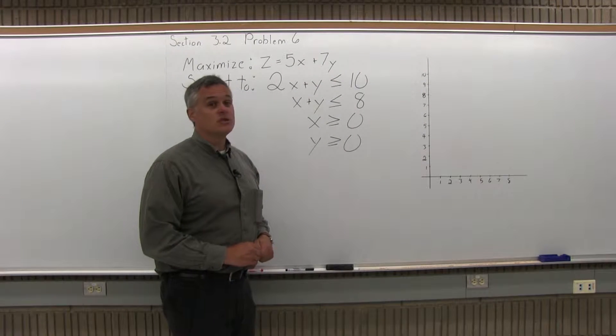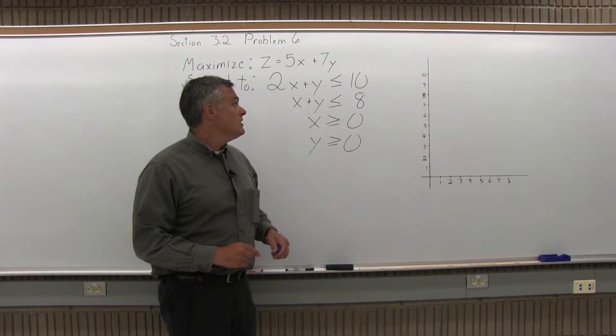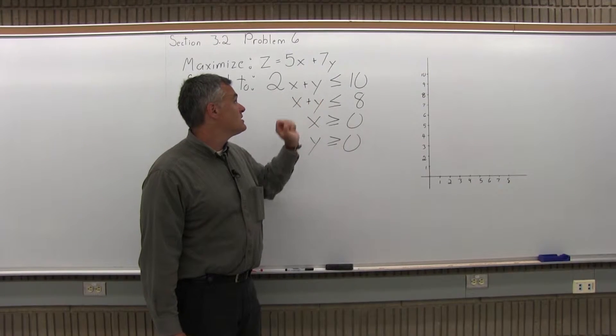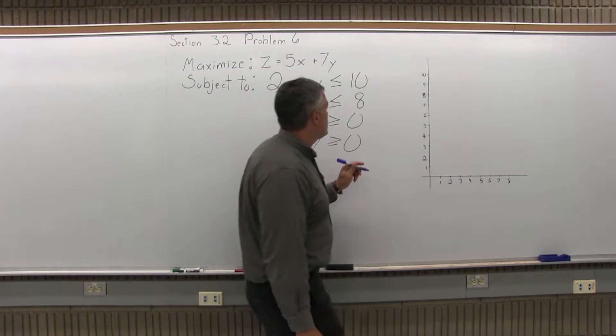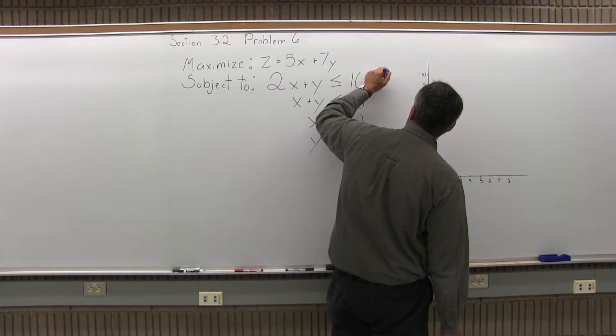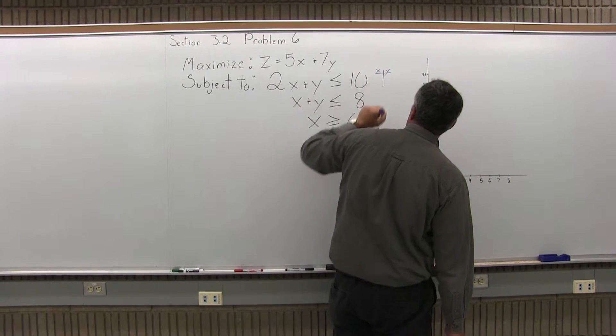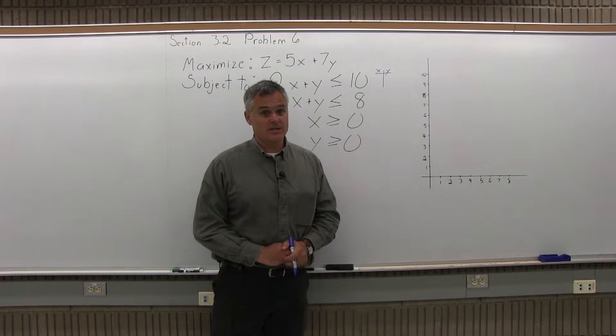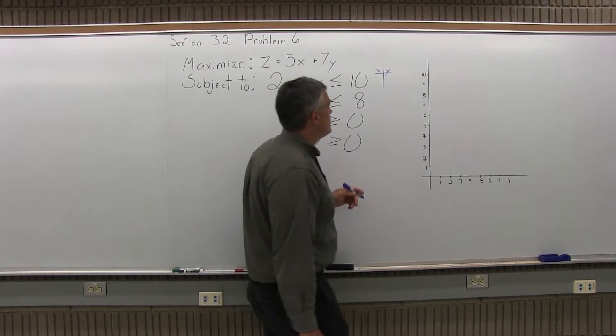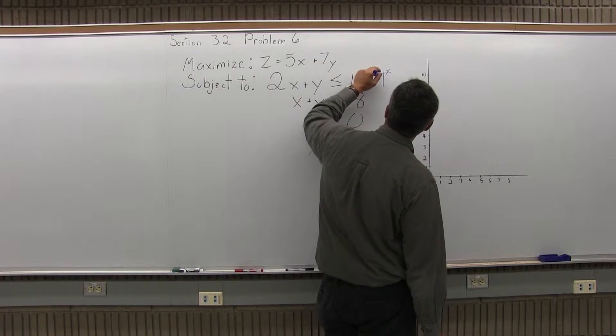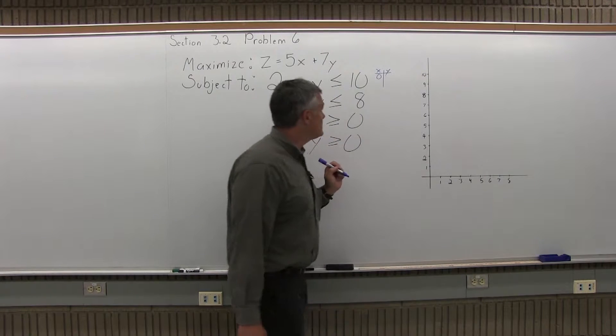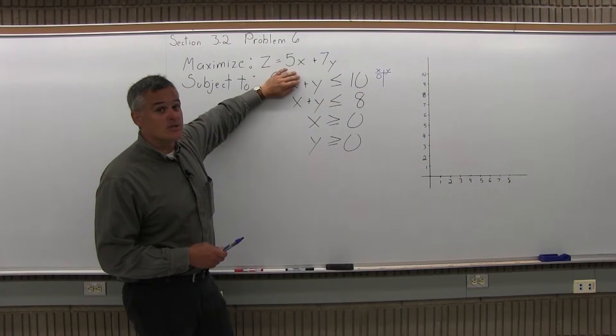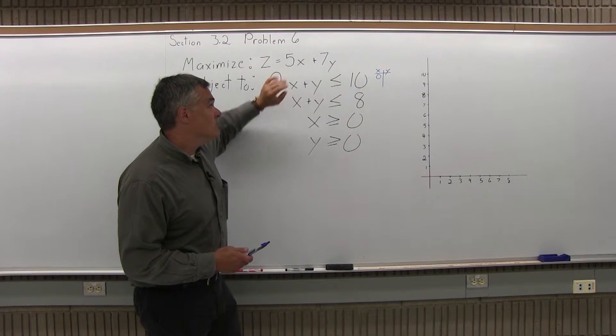The first part is to graph the feasible region. So I'm going to start by graphing the linear inequality 2x plus y is less than or equal to 10. And to get that graph, I'm going to make a little xy chart next to it, and fill it in by pretending I have 2x plus y equals 10 instead of less than, and find two points that have coordinates that make that equals true.